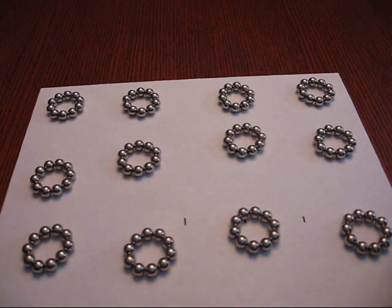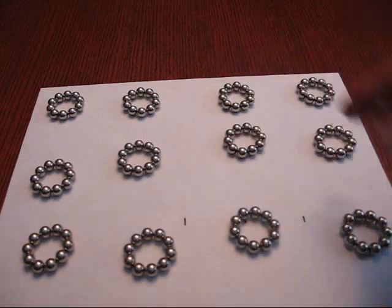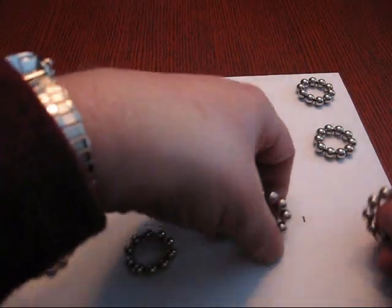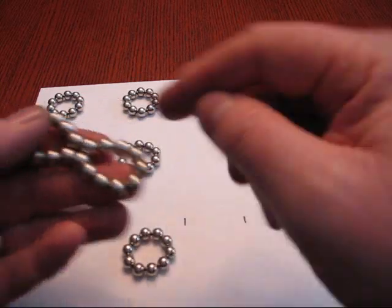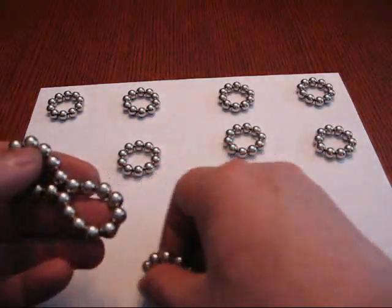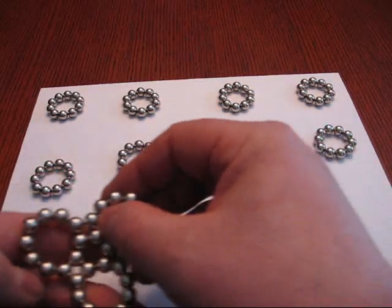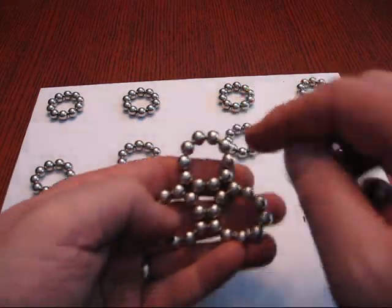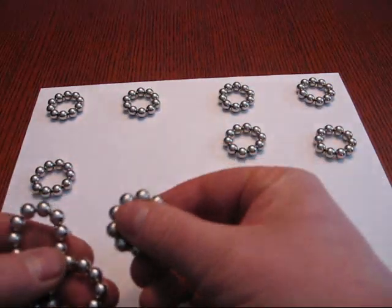They've all been made in the same direction so that the magnetism goes around consistently. When you snap them together, you'll get two spheres contacting from each group. As you start clicking more on, you'll see a little hexagon in the middle. That's what you need to look for. If you don't get a hexagon, you're doing it wrong.